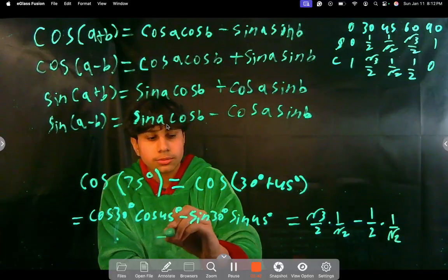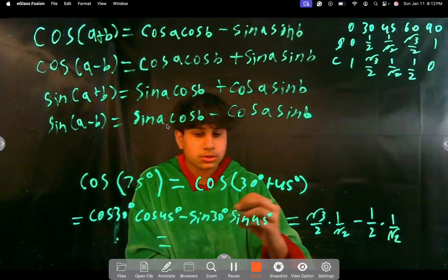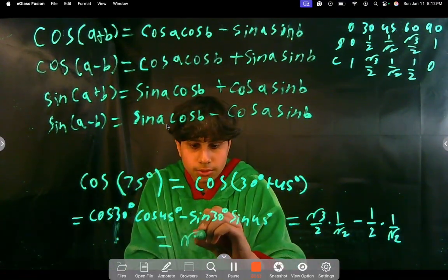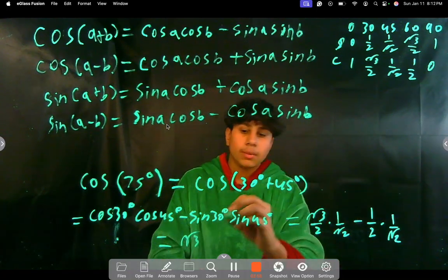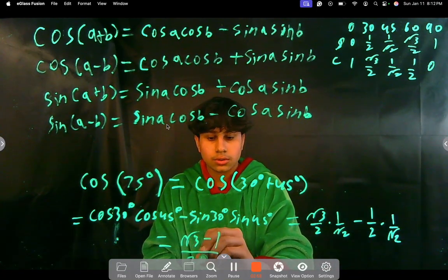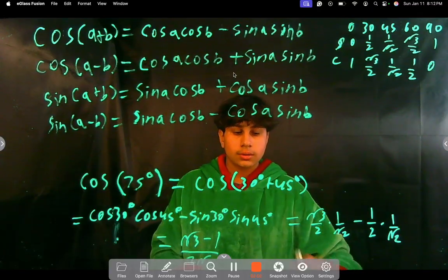So, this will simplify to, well, we have the same denominator here, right? So, we can just rewrite this as root 3, because it's root 3 times 1, minus 1 times 1 is 1. So, over 2 root 2. And, yeah, that's really it.